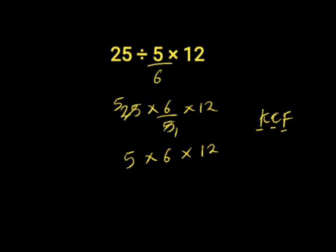Now we walk from left to right. 5 times 6 gives us 30, then 30 times 12 gives us 360.